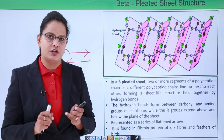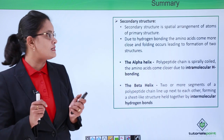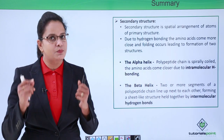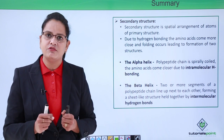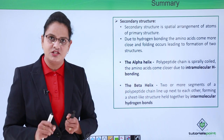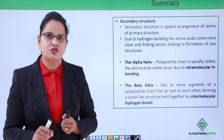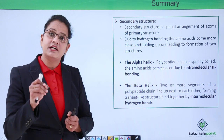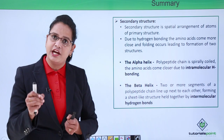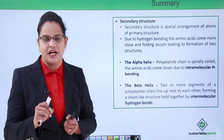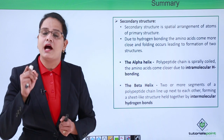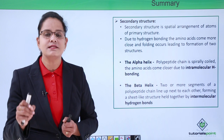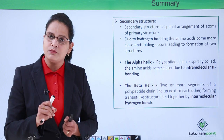To summarize: secondary structure is the three-dimensional spatial arrangement of atoms in the primary structure — it shows how the primary structure folds. Secondary structure occurs because of hydrogen bonding apart from the peptide bond, and the hydrogen bonding can be intramolecular as in alpha helix, and intermolecular as in beta pleated sheets.